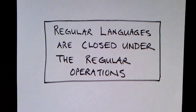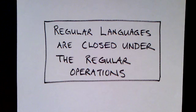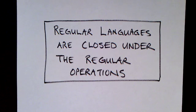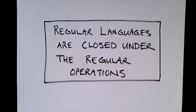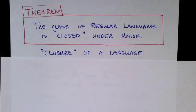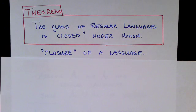Regular languages are closed under the regular operations. The regular operations are concatenation, union, and the closure operation which is often called star. In this video, we're going to show that if you take these operations and apply them to regular languages, the resulting language is also regular. First, let's look at the union operation. The class of regular languages is closed under the union operation.